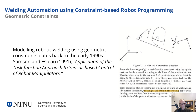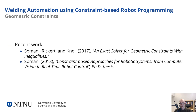Note that the modeling of welding tasks using a set of geometric constraints is not new. This line of research dates back to the early 1990s with the Task Function Approach by Samson. On the right is an excerpt from the 1991 paper, Application of the Task Function Approach to Sensor-based Control of Robot Manipulators by Samson and Spong. The authors discuss the use of constraints on geometric primitives such as points, lines and planes to define robot tasks such as tracking of the seam in arc welding. More recent work can be found in the output of the SME Robotics project — specifically in the paper An Exact Solver for Geometric Constraints with Inequalities by Somani, Rickert and Knoll from 2017.